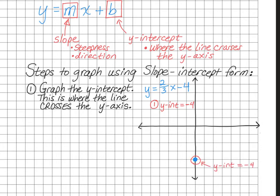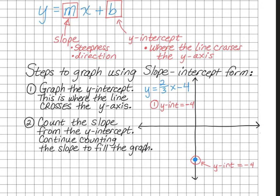The second step is to count the slope from that y-intercept point that you just drew, and I like you to continue counting the slope until you fill up the graph. Looking back at our equation, remember that the slope is m — the number in front of the x. In this case, our slope is positive two-thirds. Step 2 is the slope, which is 2/3. We count from the y-intercept: the top number is your rise and the bottom number is your run. So from this point, we're going to rise 2 and run 3.